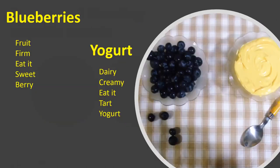Let's say we're in the kitchen and we have a bowl of blueberries and a bowl of yogurt. There are some things we know about the blueberries — they're firm, we can eat them, they're berries. Some things we know about the yogurt — it's dairy, it's creamy, it's a little more tart. So we have these blueberries and we have this yogurt.